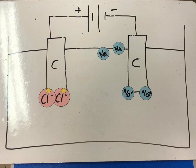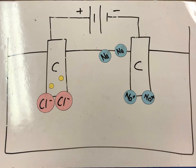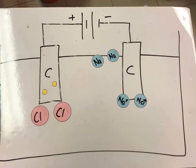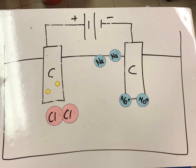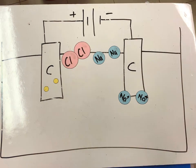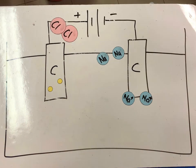Back at the positive electrode, each chloride anion will again lose an electron to form chlorine atoms. The chlorine atoms will then covalently combine with each other to form a chlorine molecule, which will again diffuse off as chlorine gas.